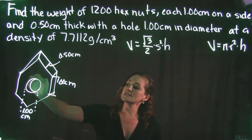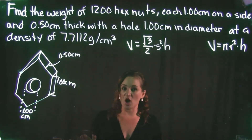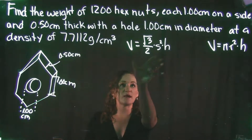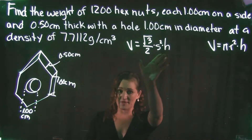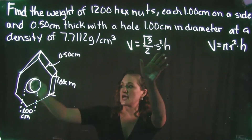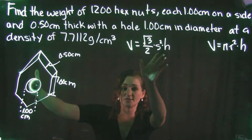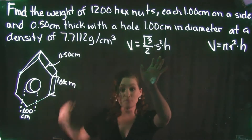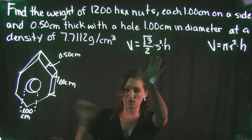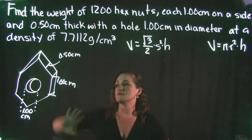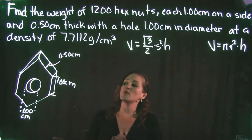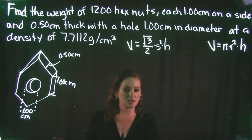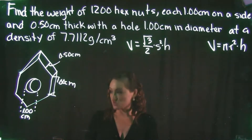If we ignore the center hole and treat the nut as solid, we have a hexagonal prism. The hex nut also has a circular center hole, so we'll find the volume of that cylinder and remove it from the hexagonal prism volume. That gives us the hex nut volume, which we then multiply by the density and by 1,200.